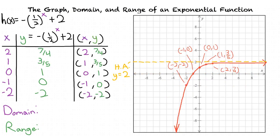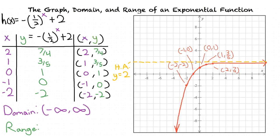Our next step is to move our graph upward two units. Our domain does not change, since the graph still continues in both directions of the x-axis, so it remains at negative infinity to infinity. Our range does change, since we reflected it over the x-axis and moved it upward two units. Our range is now negative infinity to 2, not including 2, since the y values get smaller when the x values get smaller, but when the x values get larger the y values get closer to 2 but do not reach 2.